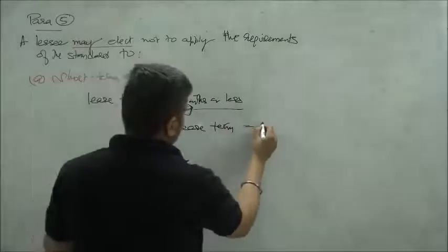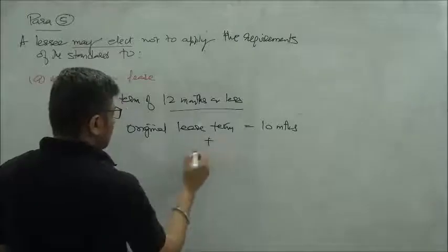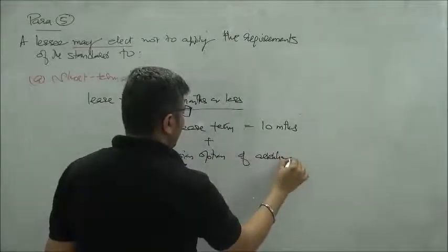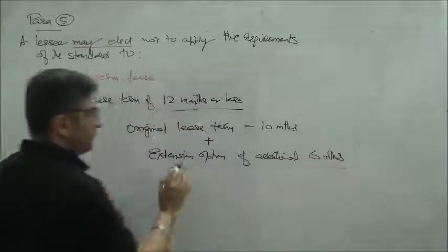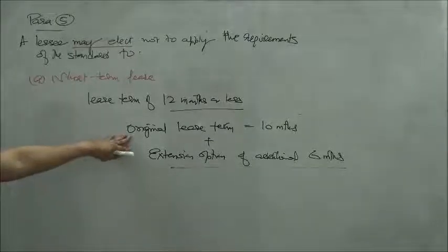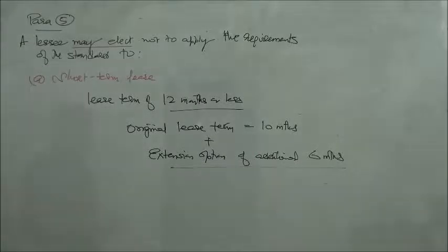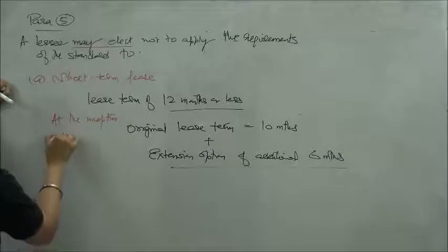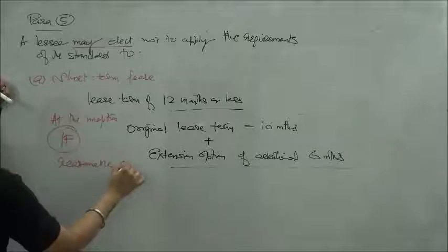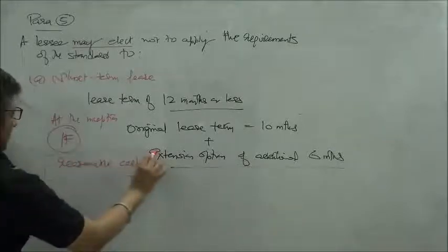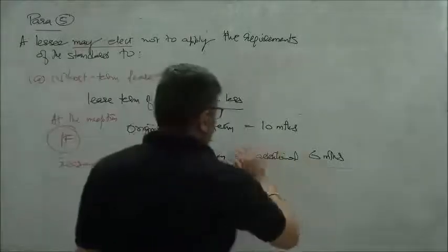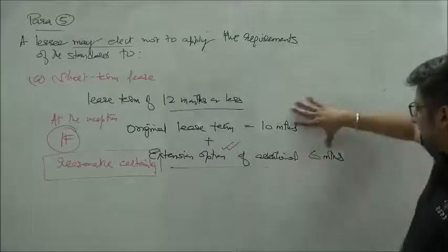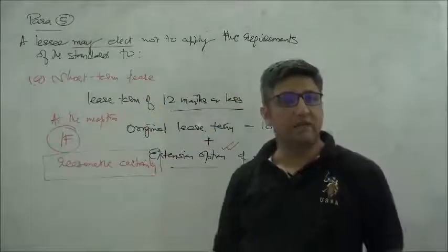My original lease term is for 10 months, plus there's an extension option of additional six months. There's a minimum lease period of 10 months and an extension option of six months. At inception, if there's reasonable certainty that this option will be exercised, it means the total lease term for accounting purposes shall be 16 months, and therefore this exemption will not be available.